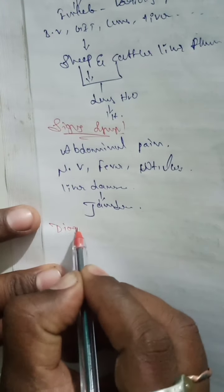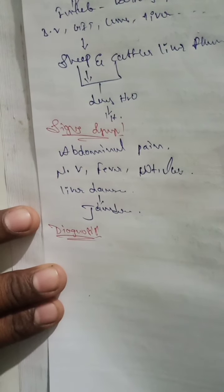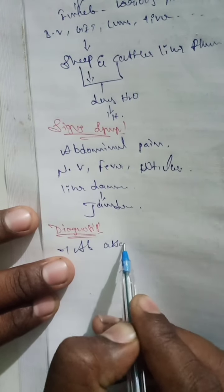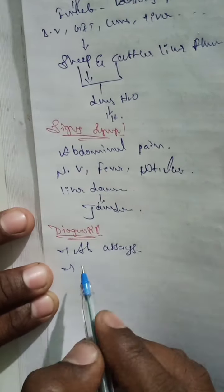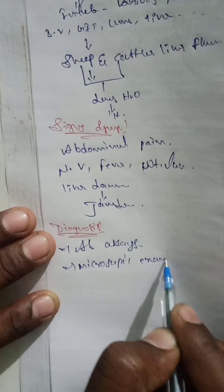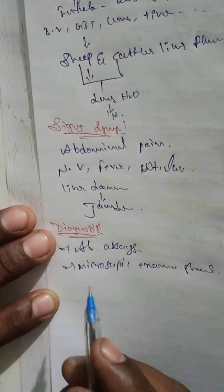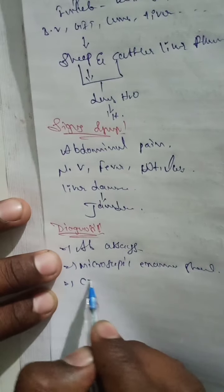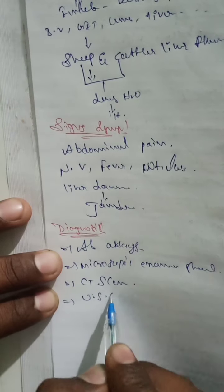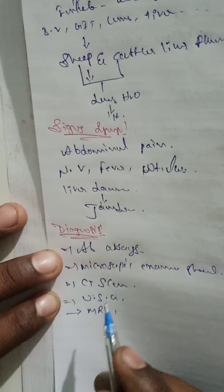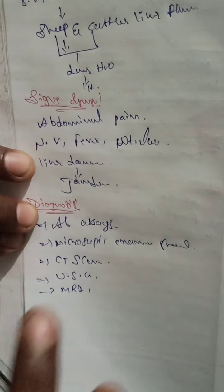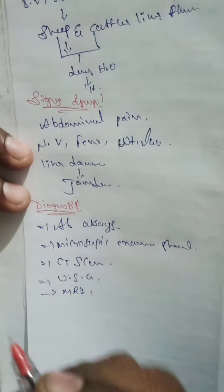How to diagnose Fasciola hepatica? Diagnosis methods include: first, antibody assay; second, microscopic examination of stool; and it can also be identified by CT scan, ultrasonography, and MRI scan. These methods are available for determining whether Fasciola hepatica is present in the body.